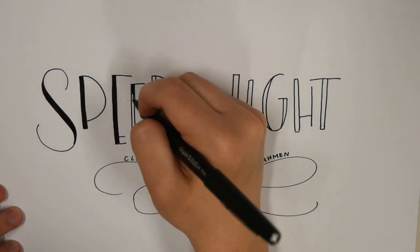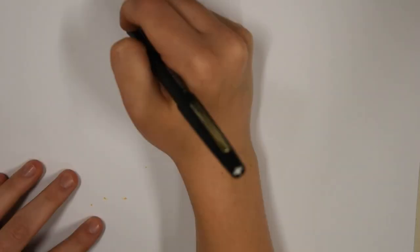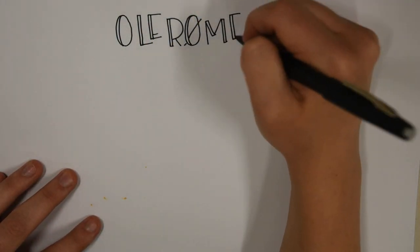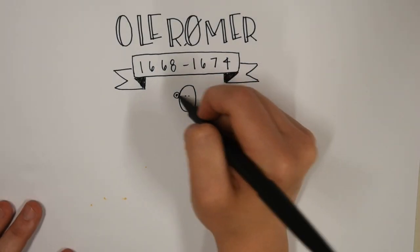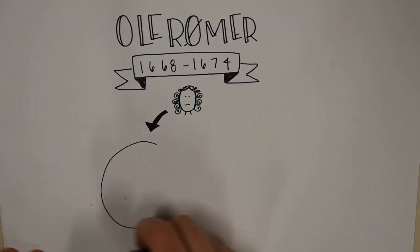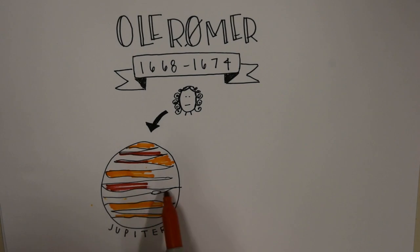Calculating the speed of light with Jupiter's moons by Claire Jenneres and Linnea Dallmann. You've probably never heard of Ole Rømer. Ole Rømer is a Danish astronomer who used Jupiter's moons to calculate the speed of light from 1668 to 1674, a long time ago. How did he do that?